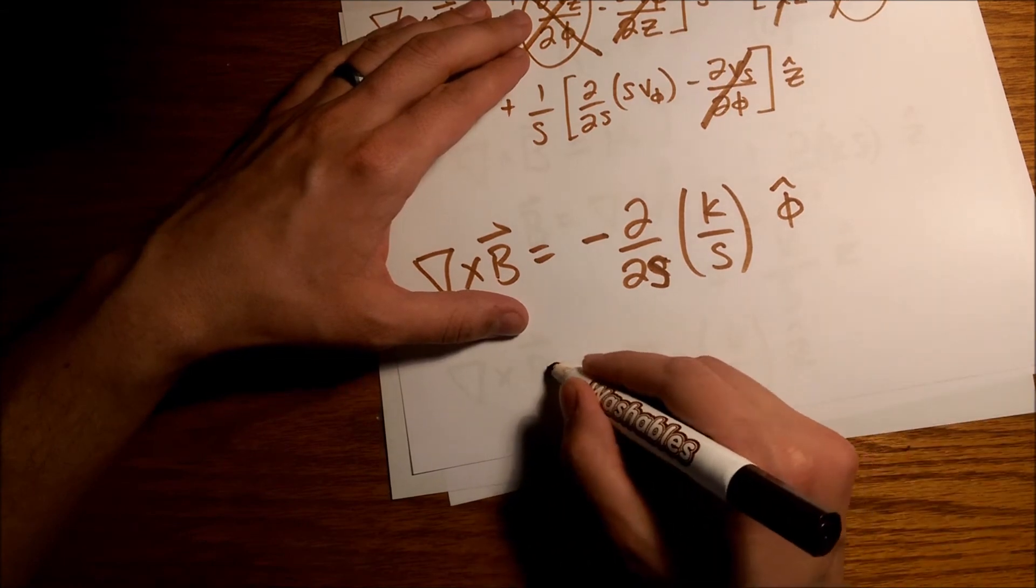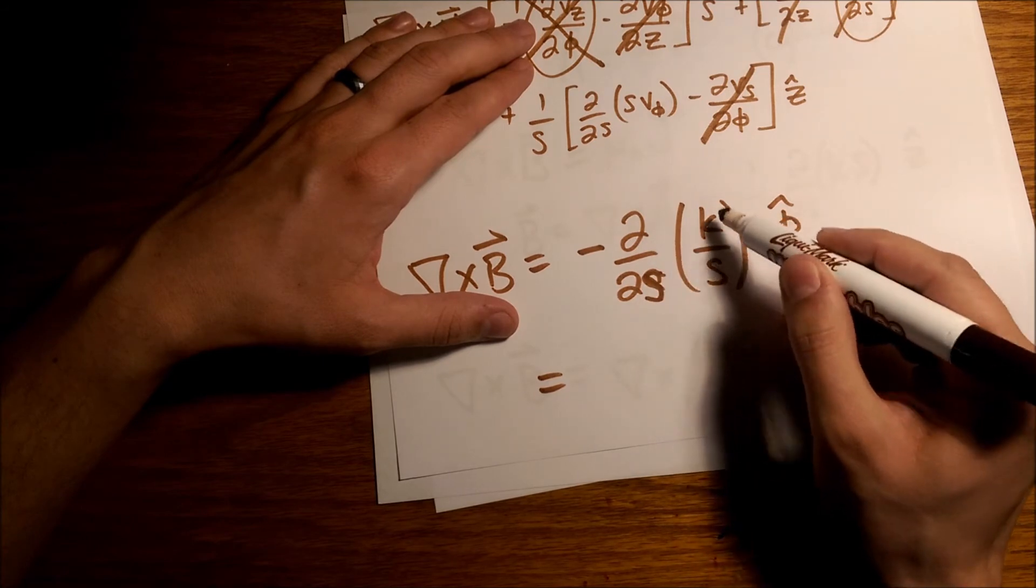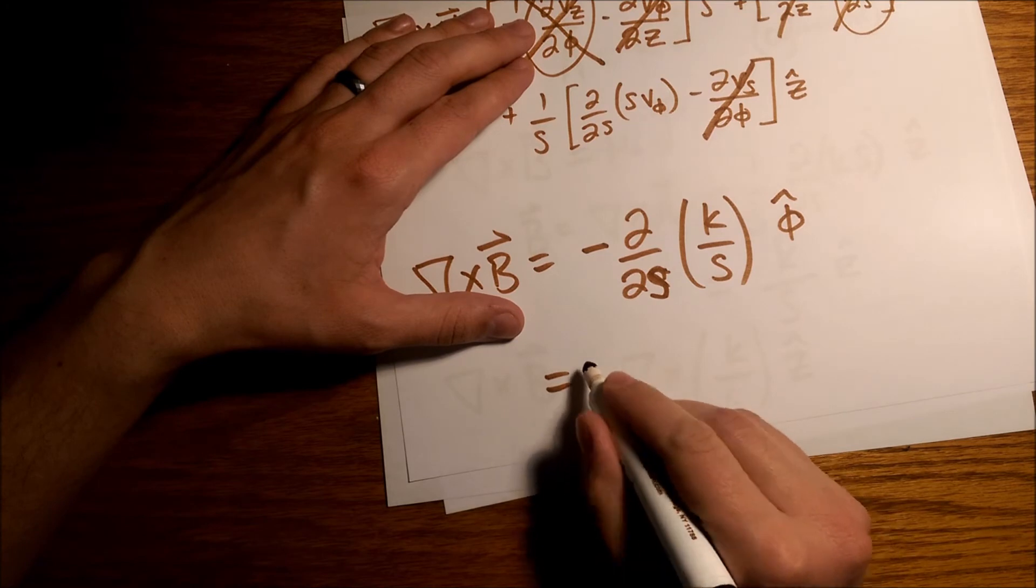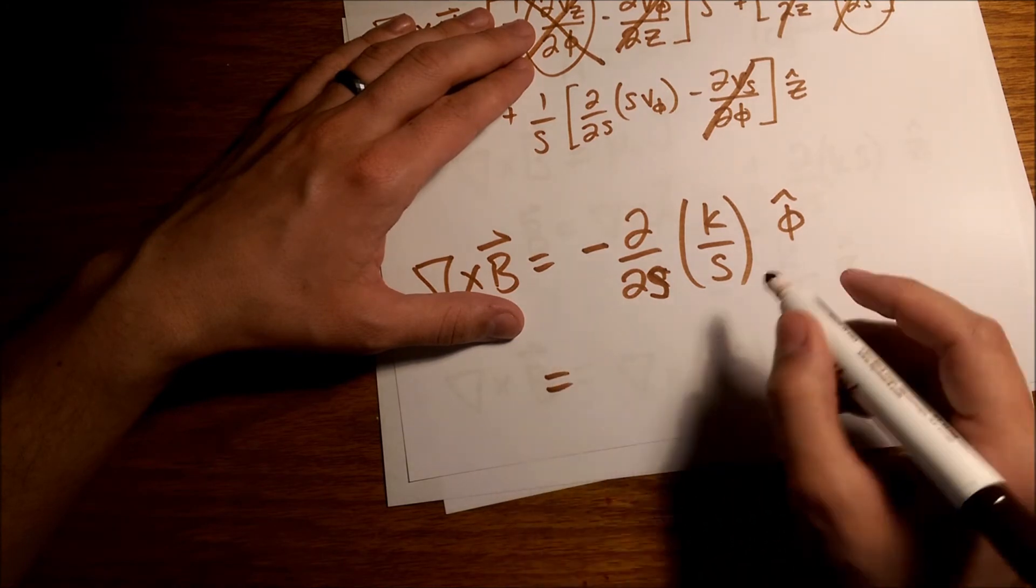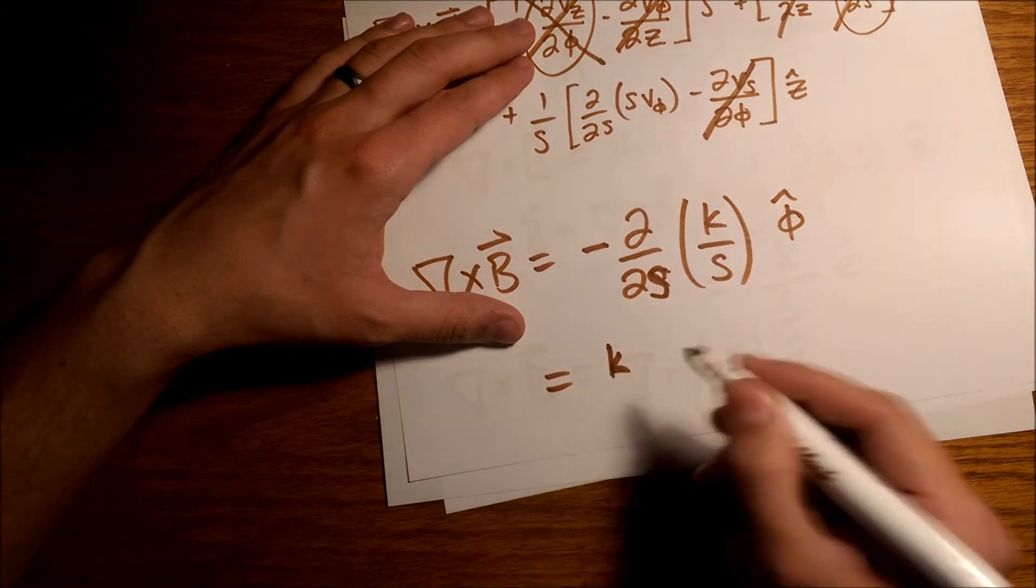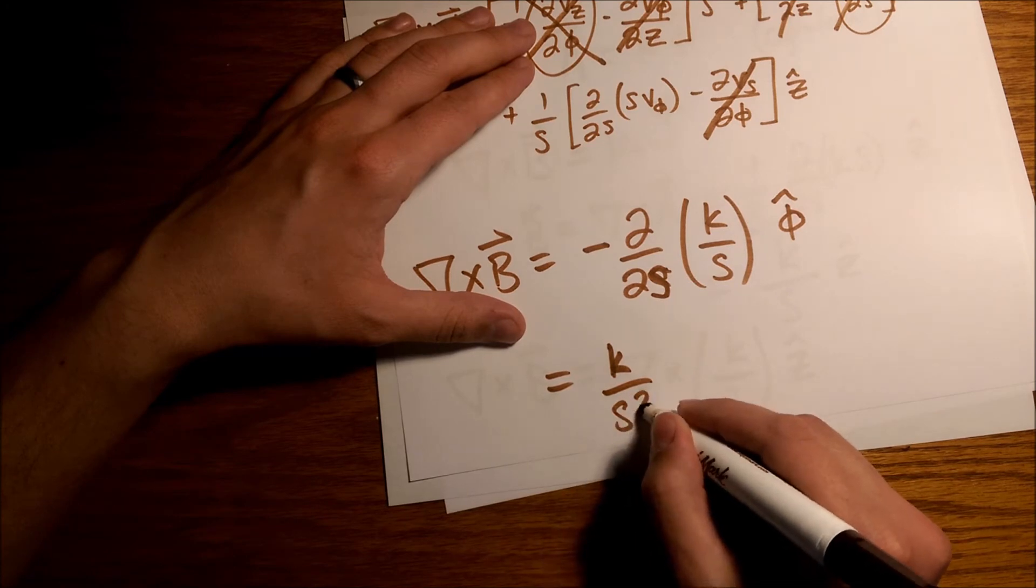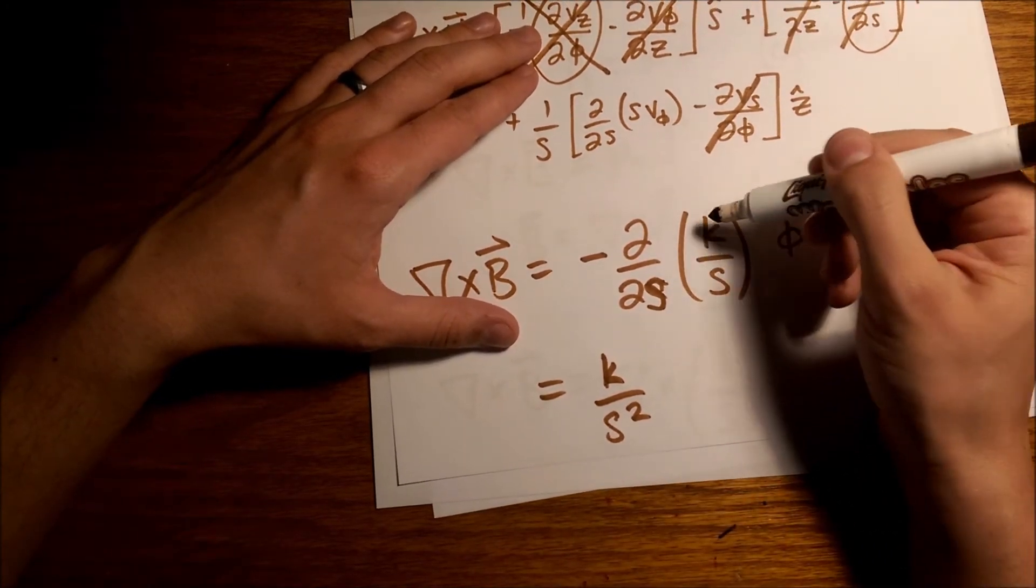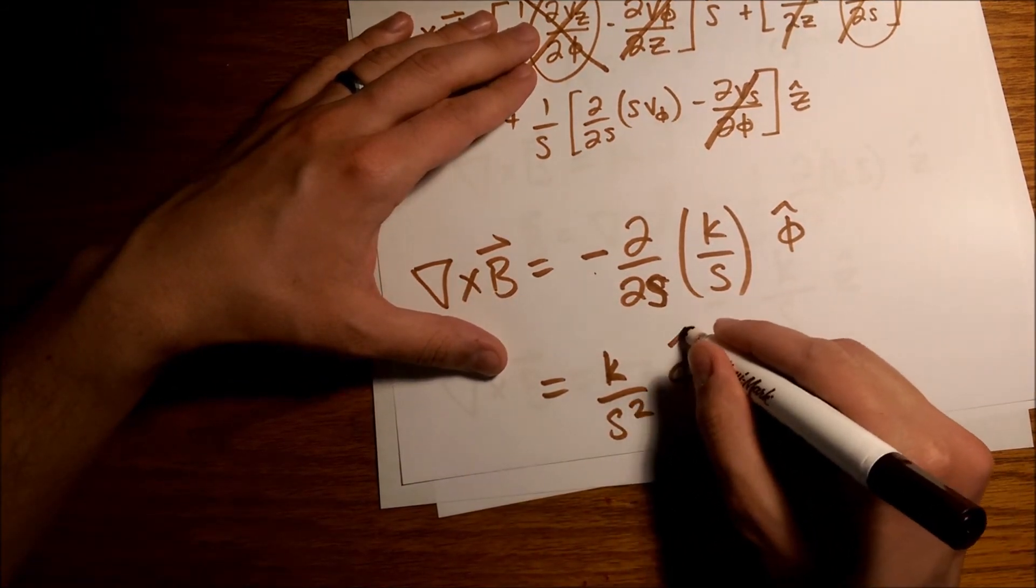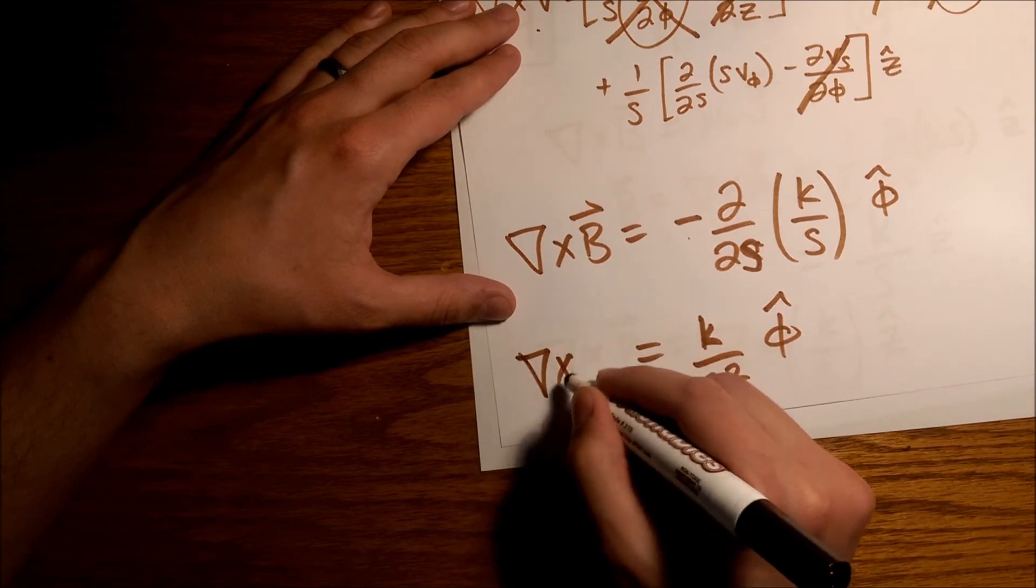Alright, so we have k as a constant can come out. What is the derivative of 1 over s? Well, we get a minus sign out, which will cancel this minus sign, so that becomes a plus and goes away. k, and then we have 1 over s squared. So remember, we have our k, and then when we take this derivative, we have a 1 over s squared. And we actually would get a minus 1 over s squared, but the minus sign is cancelled with that. And then we have our phi hat unit vector.